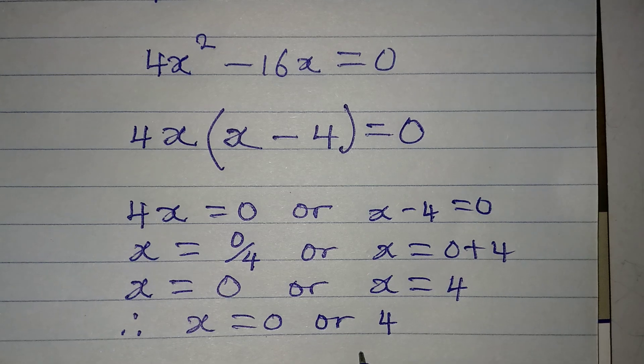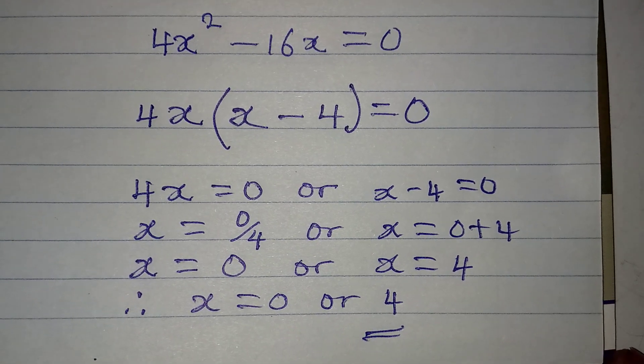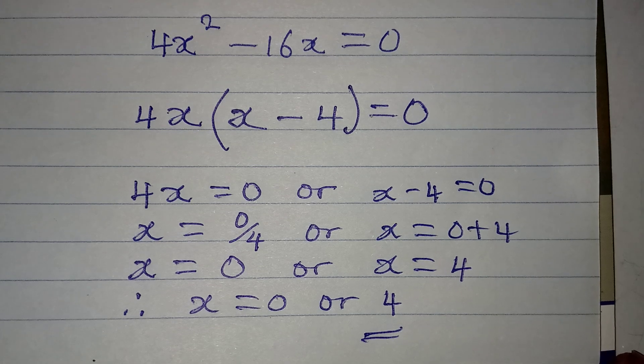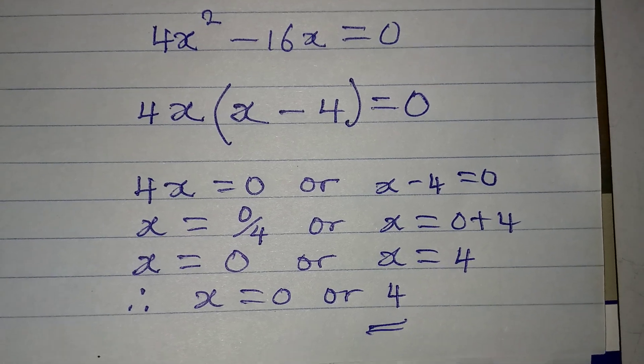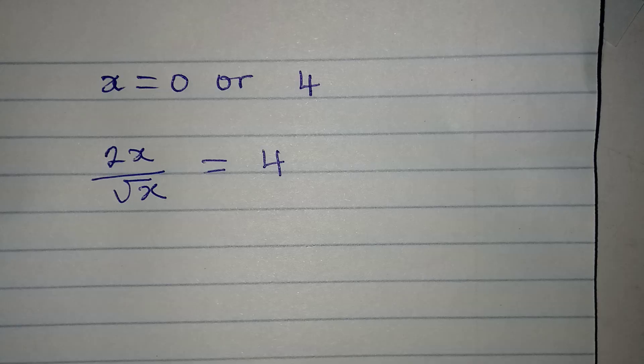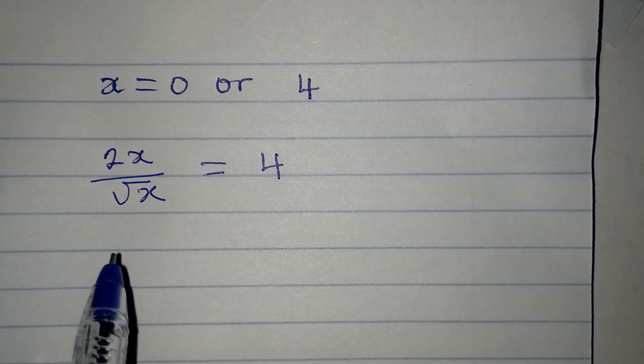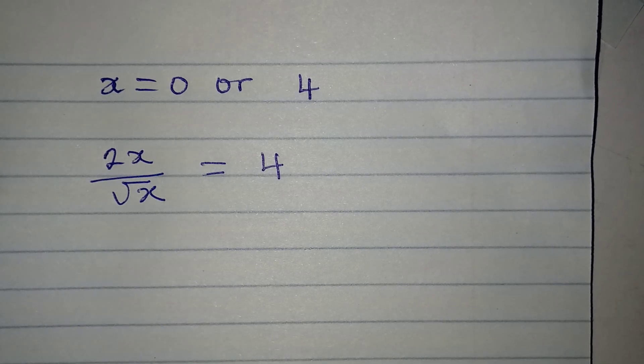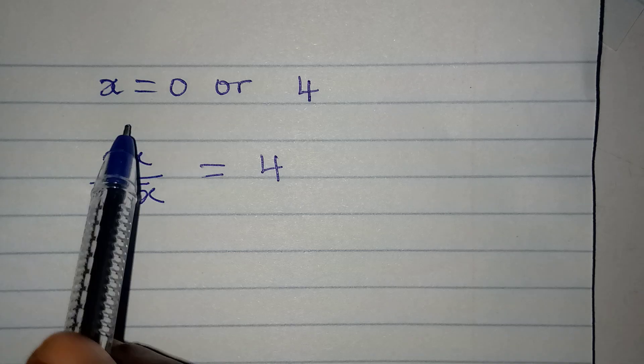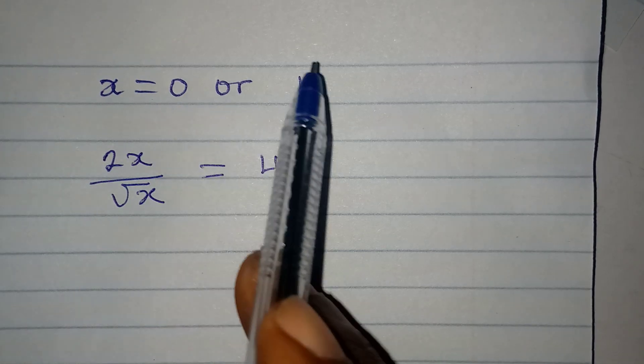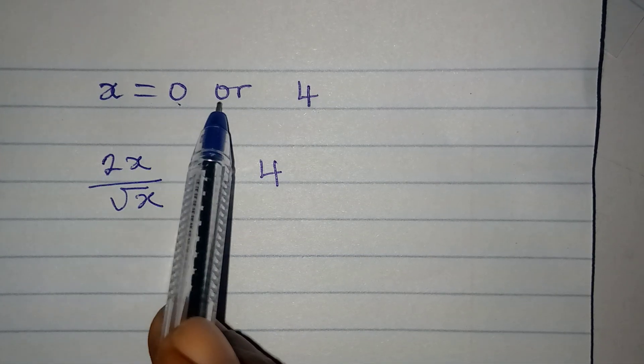But now, let's check. Does it mean that the two solutions will satisfy the original equation? Let's go back to the original equation. So, this is the original equation. And then, these are the solutions. We have x to be 0 or 4.